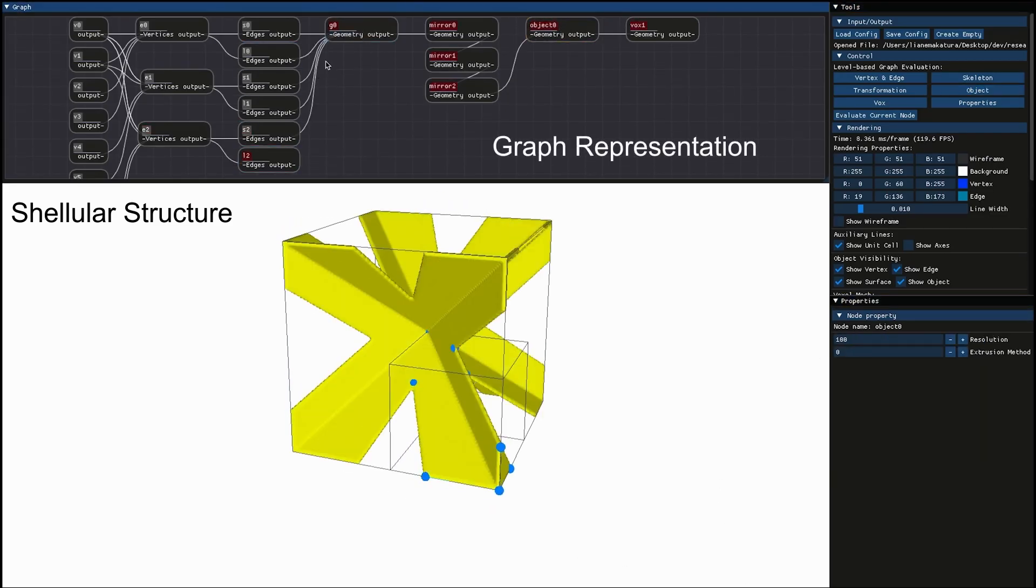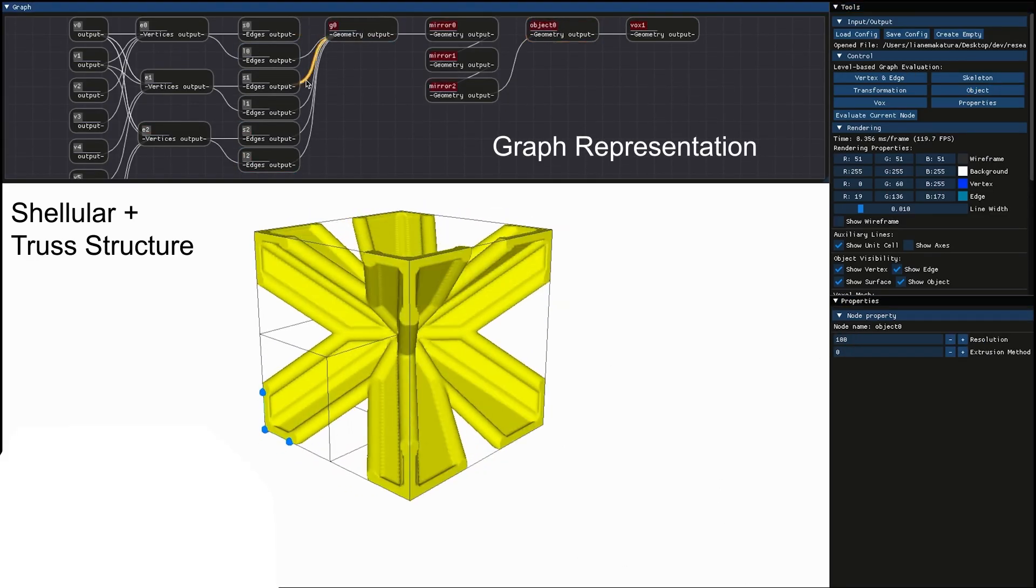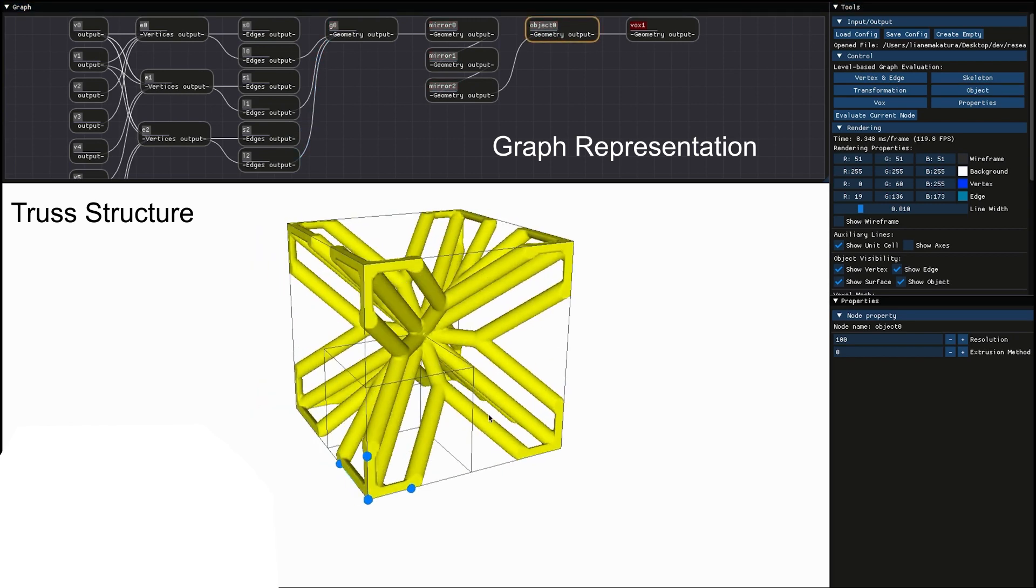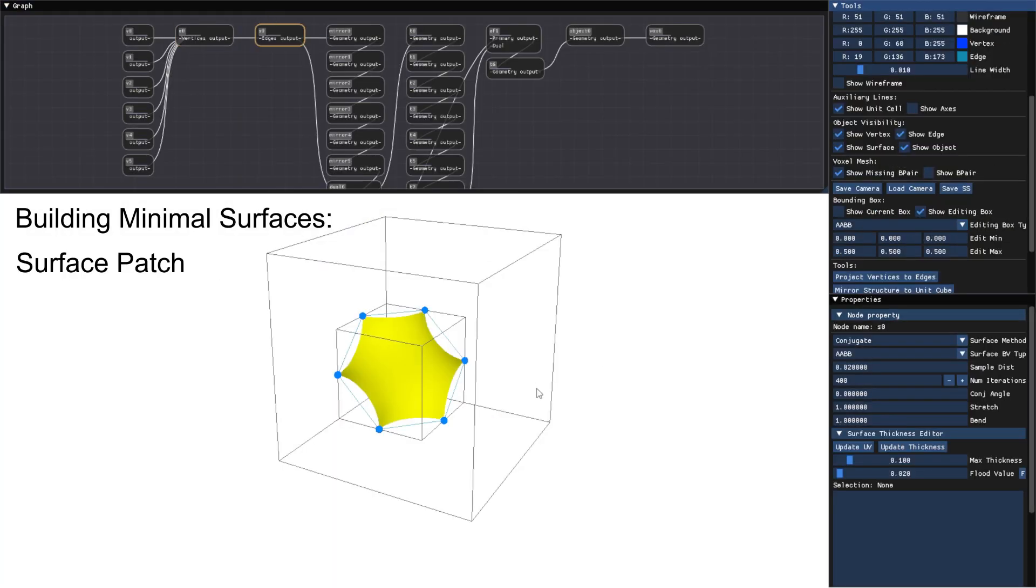In this session, a user seamlessly transitions between diverse structural elements like thin shells and trusses. Our representation can also intuitively express structures based on minimal surfaces,